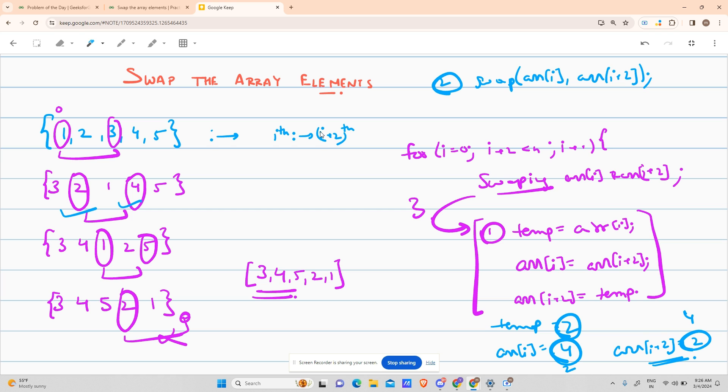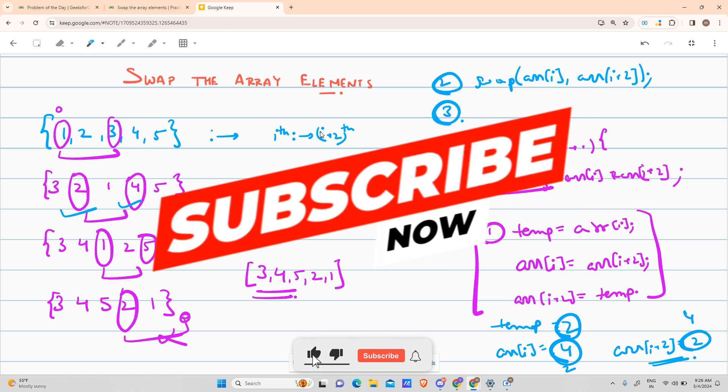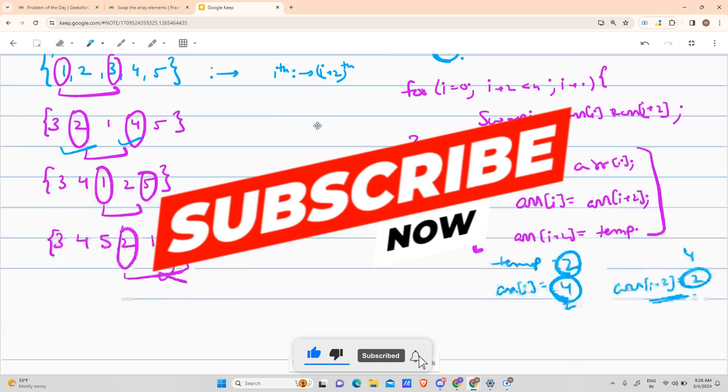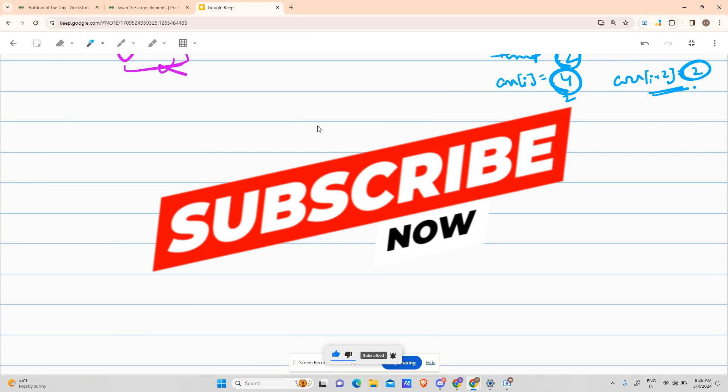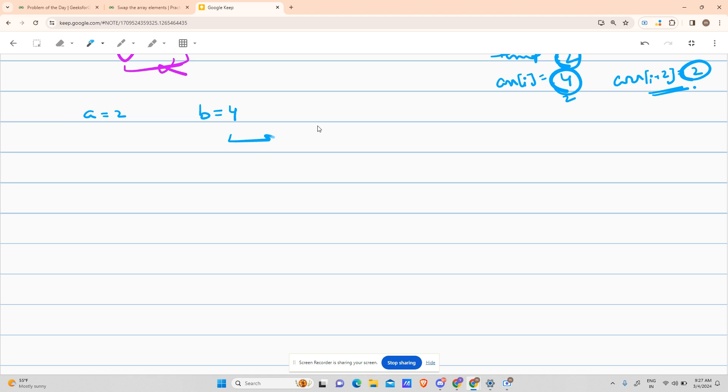Third function, this is slightly the math-based one. Suppose you have a as 2, b as 4, and you want to find an outcome where a equals 4, b equals 2. So what you can do is: a equals a+b, b equals a-b, a equals a-b. This is the standard operation that I learned. You can also memorize this.